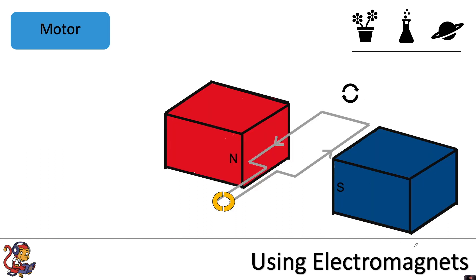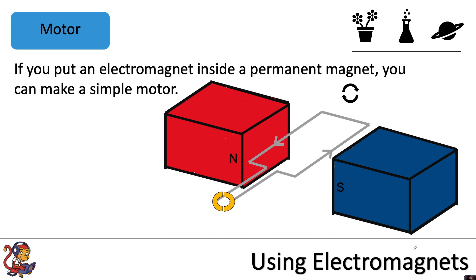Finally, electromagnets are also useful in motors. If you put an electromagnet inside a permanent magnet, you can make a simple motor. I've shown this just by one coil of wire going up, looping round and coming back along. Inside a permanent magnet we've got north pole here and south pole here.